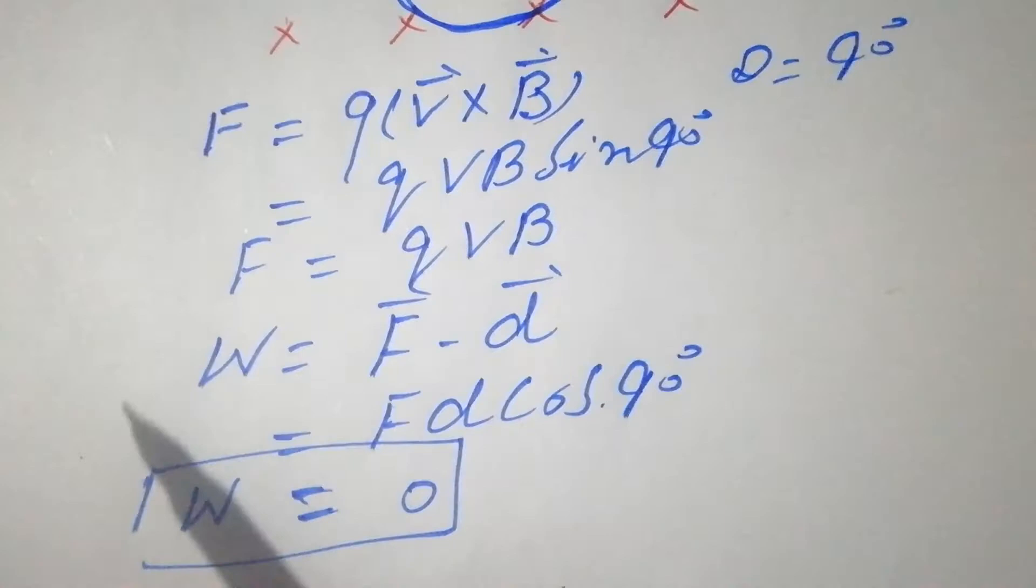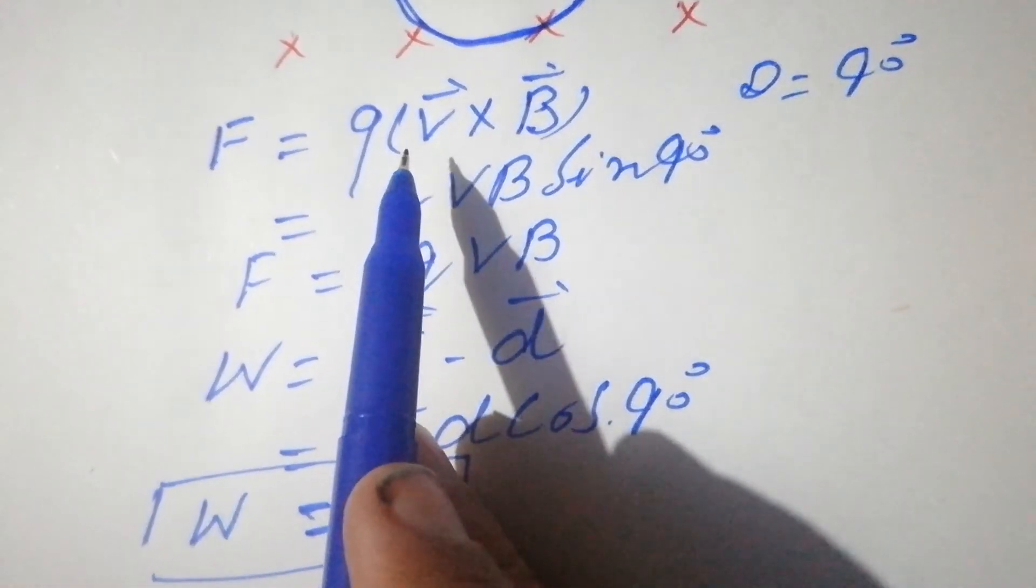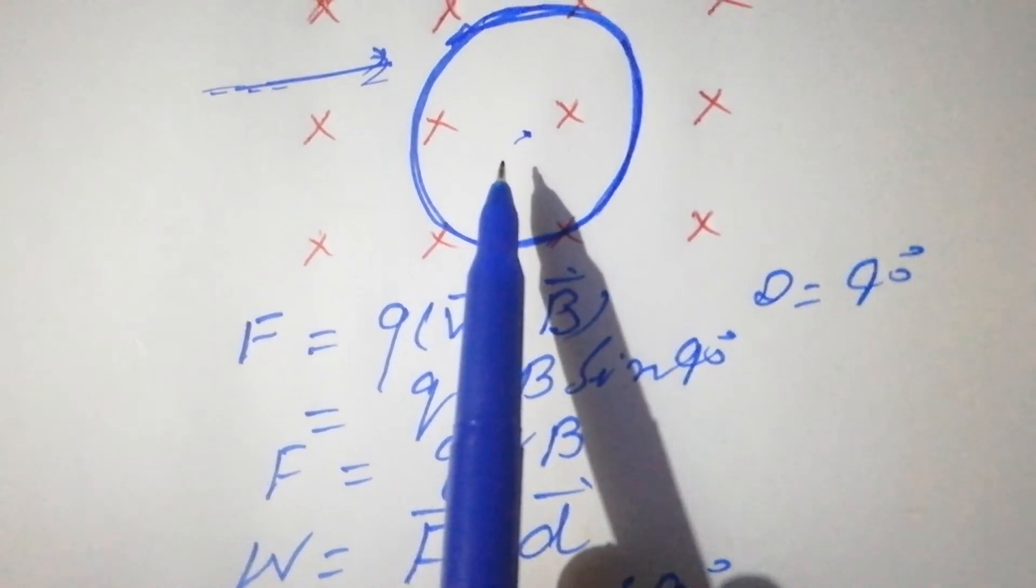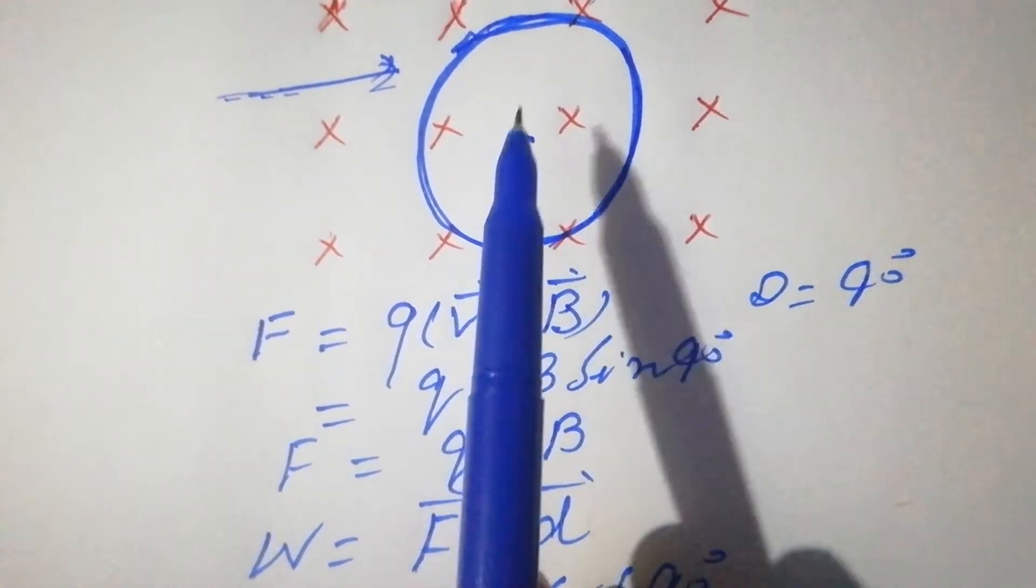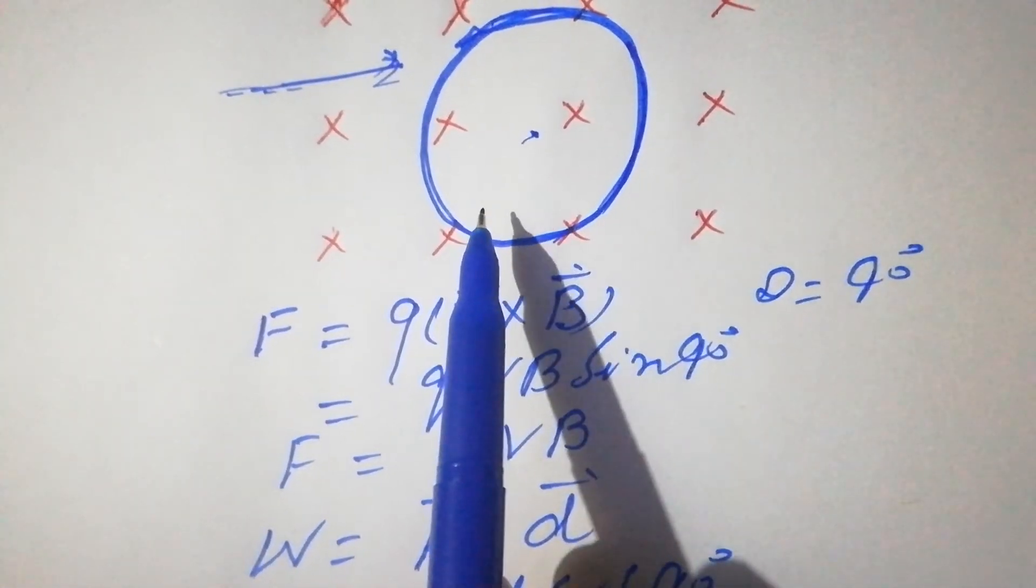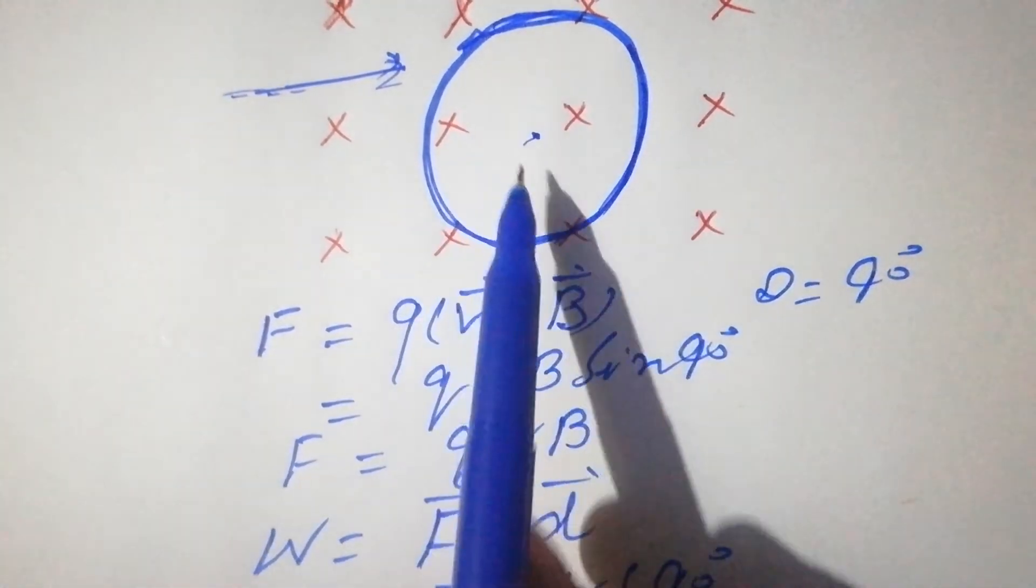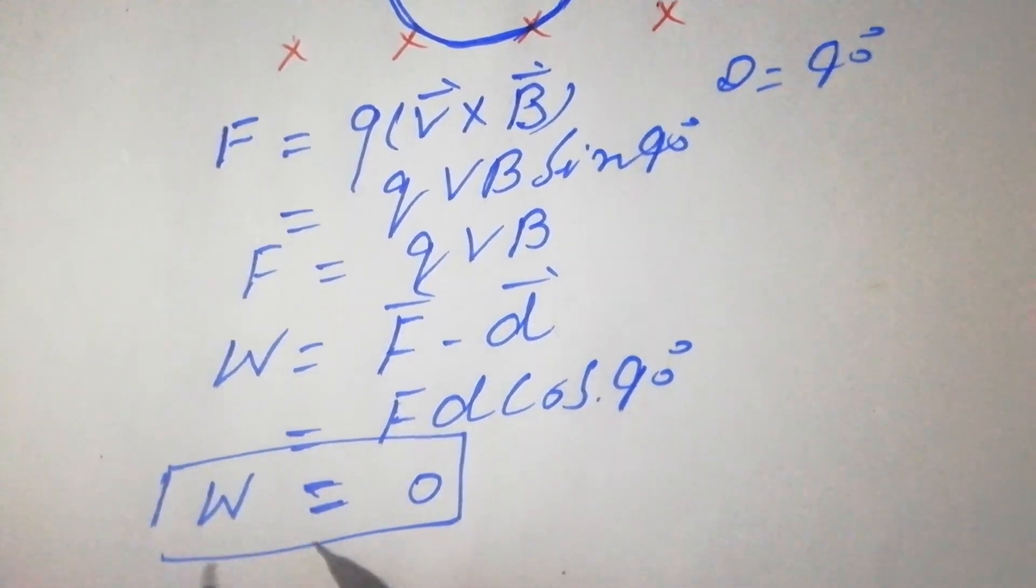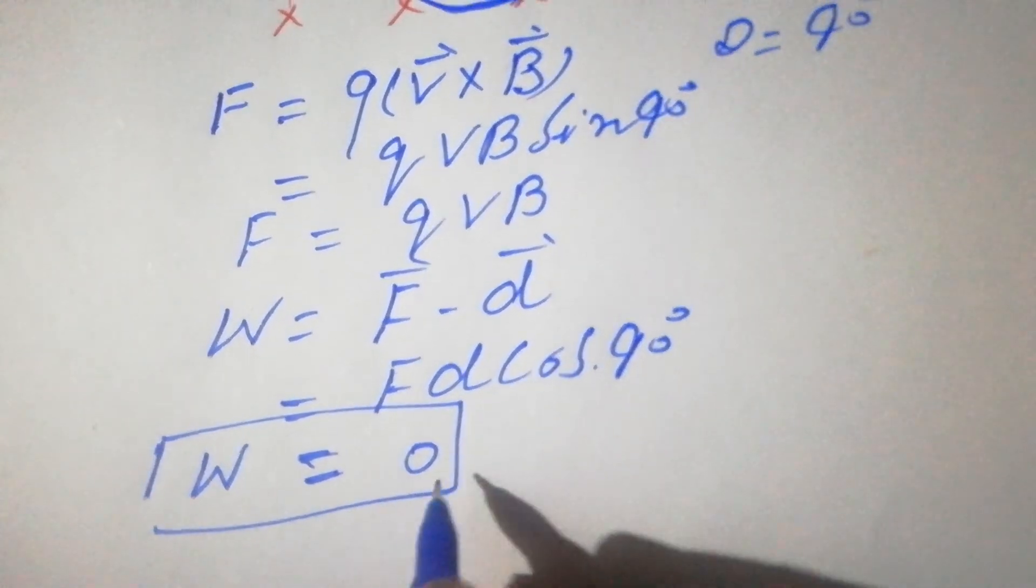In another way, we can say that the magnetic field is a conservative field, and in a conservative field the work done in a closed path is 0. That's why magnetic force does no work: W = 0.